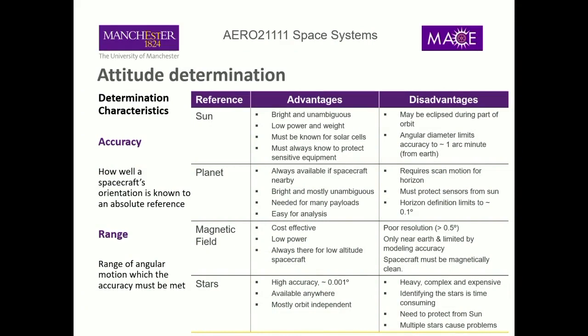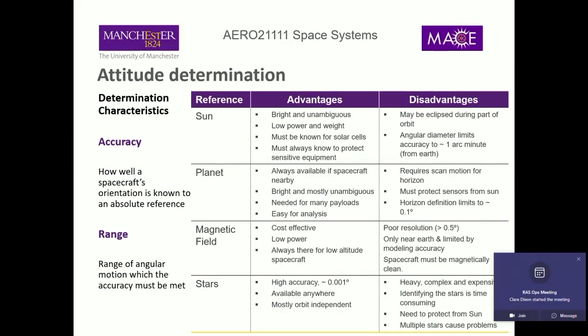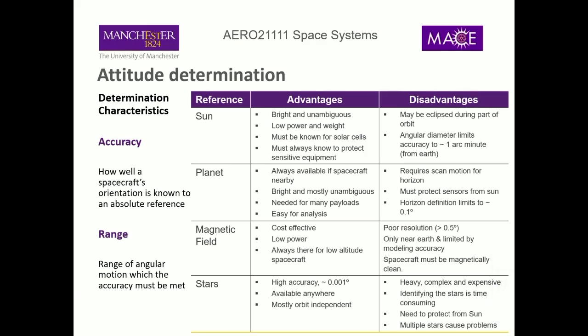In terms of knowing where we want our spacecraft to point or determining our attitude, we've got a number of different references that we can use. These are points of reference — if we know from what direction that point of reference is, we can work out where our spacecraft is pointing. One of these is the sun: a very bright star in the sky that we can definitely know the direction of. It's very bright, very unambiguous, and we don't need very much power to identify where the sun is.